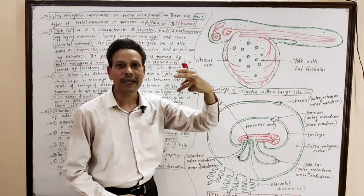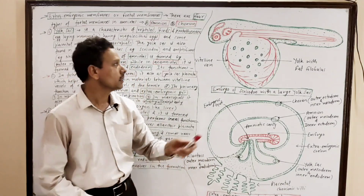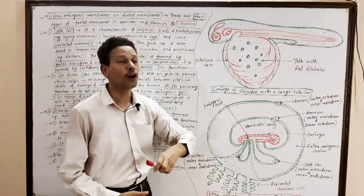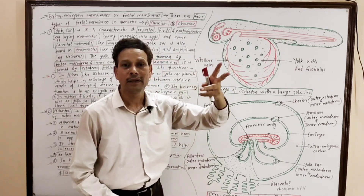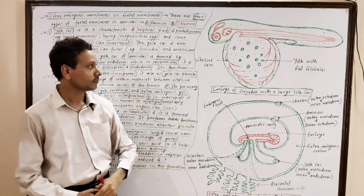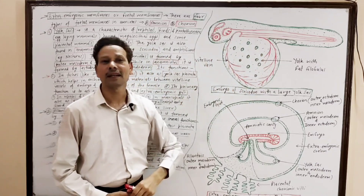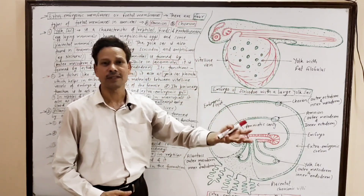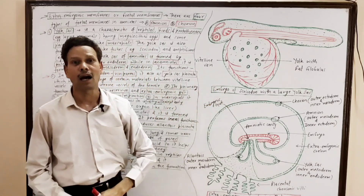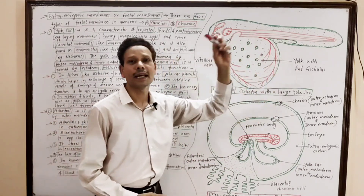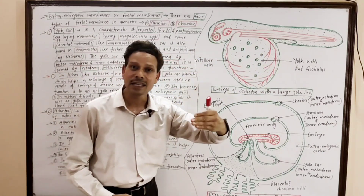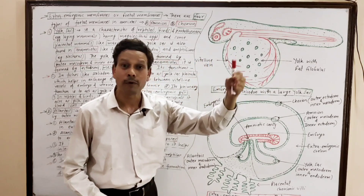The yolk sac involves in exchange of certain materials between the vitelline blood vessels of the embryo and blood vessels of the uterus of the female. In case of fishes and amphibians, it involves in the formation of yolk sac placenta. Note down: this yolk sac acts as a reservoir of yolk — it acts as an extra embryonic gut.